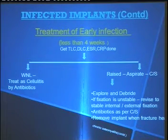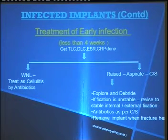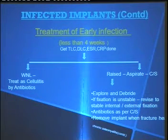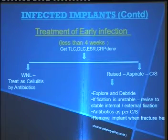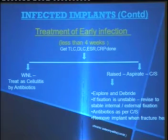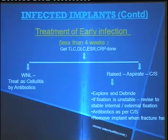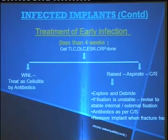For early infection, less than four weeks old: get total differential counts, ESR, and CRP done. If they are within normal limits, there is nothing to worry — treat it as cellulitis with antibiotics. If they are raised, indicating deep infection, aspirate and submit for culture sensitivity. Give antibiotics as per culture sensitivity reports. Explore and debride; if fixation is unstable, revise to stable fixation, or remove the hardware and go for external fixation.